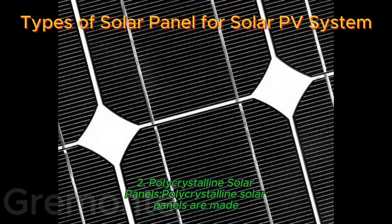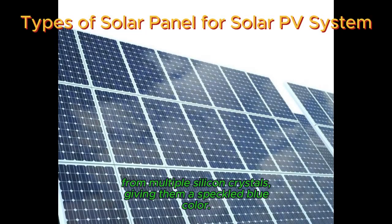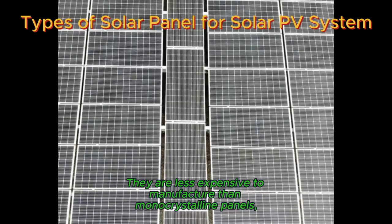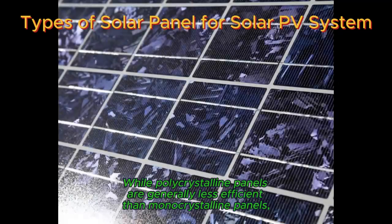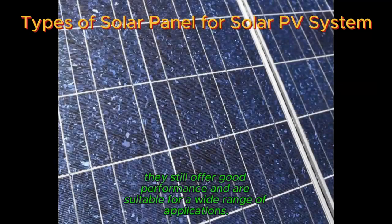2. Polycrystalline solar panels. Polycrystalline solar panels are made from multiple silicon crystals, giving them a speckled blue color. They are less expensive to manufacture than monocrystalline panels, making them a cost-effective option for many installations. While polycrystalline panels are generally less efficient than monocrystalline panels, they still offer good performance and are suitable for a wide range of applications.